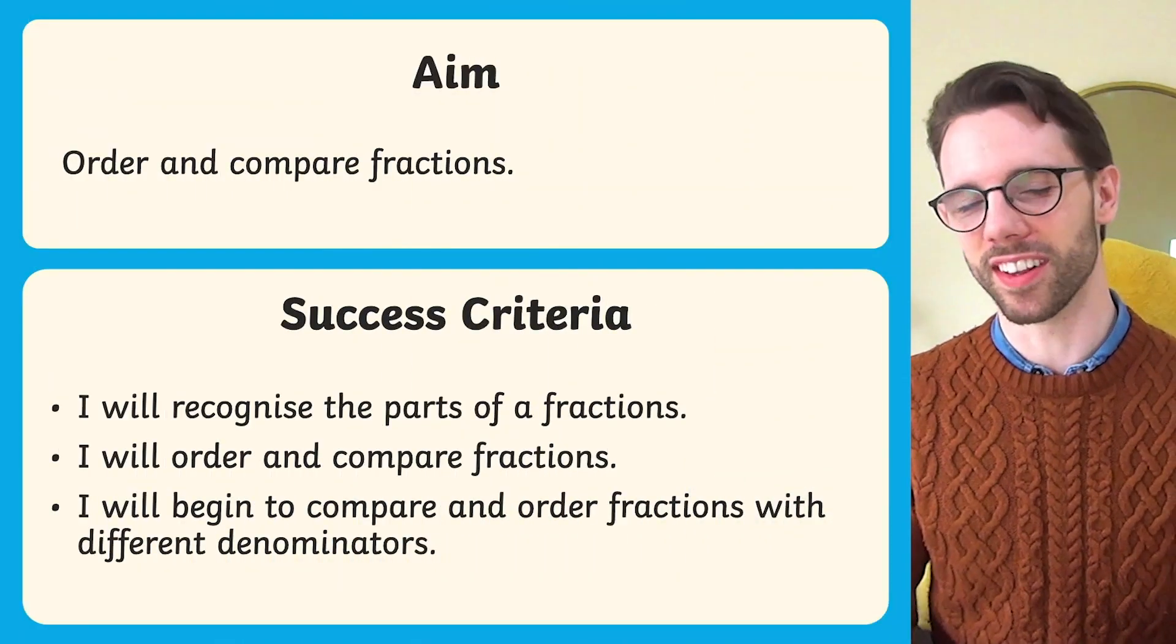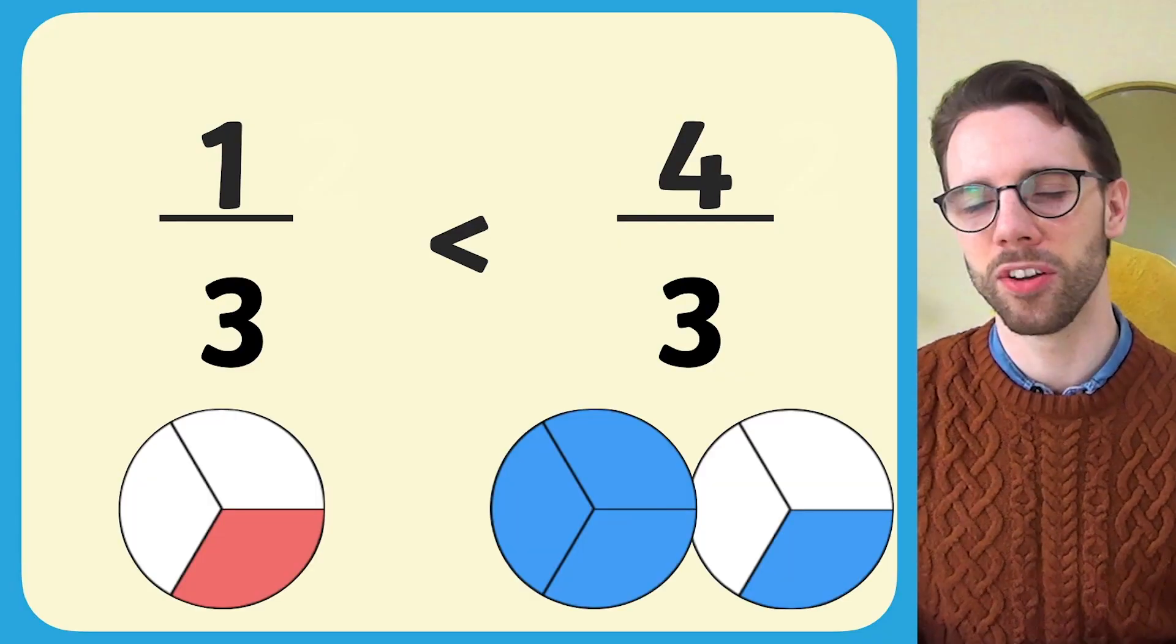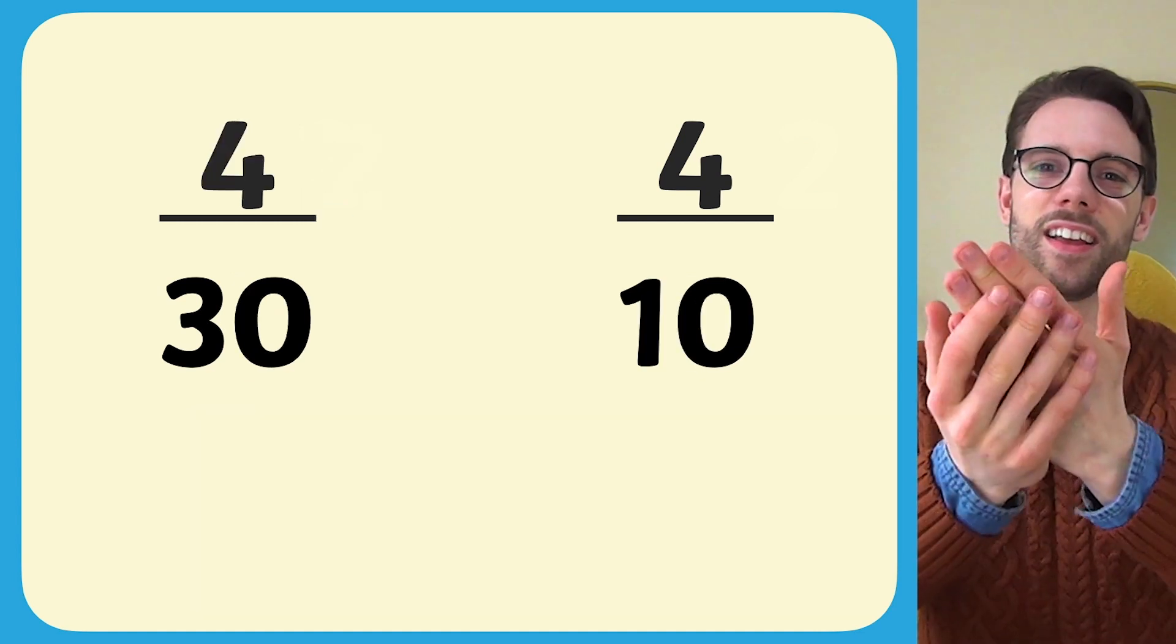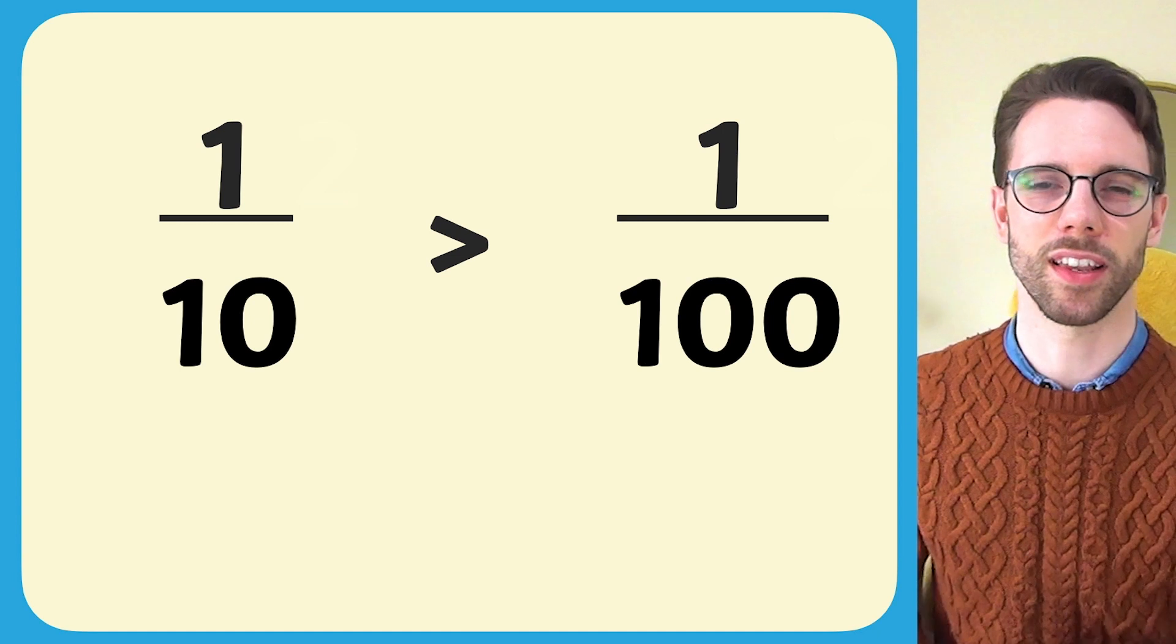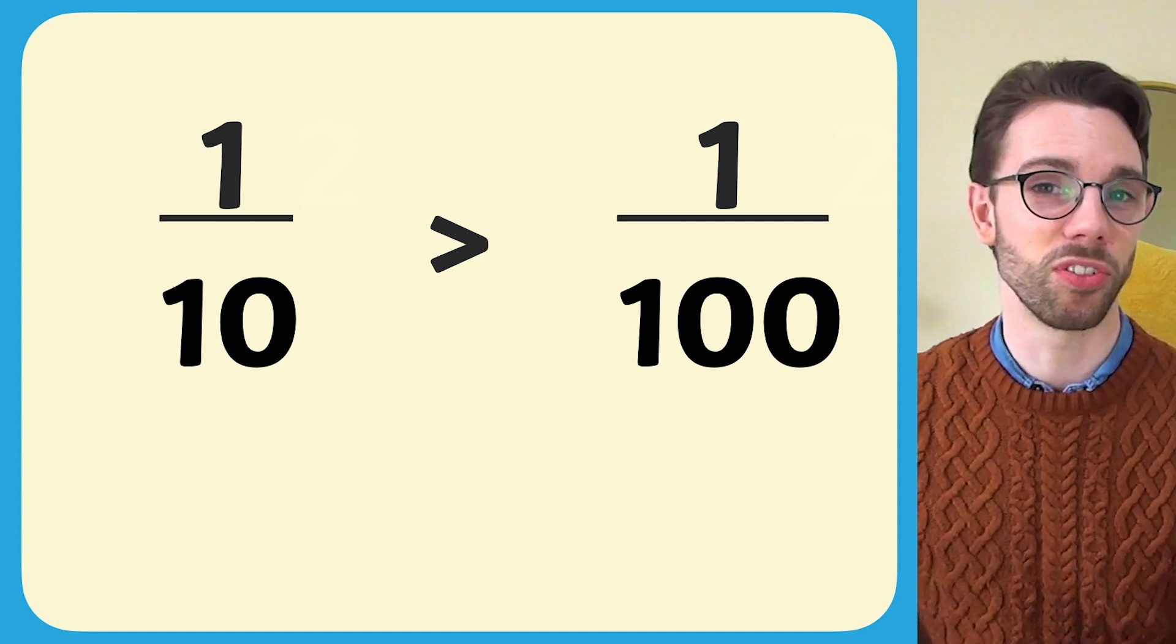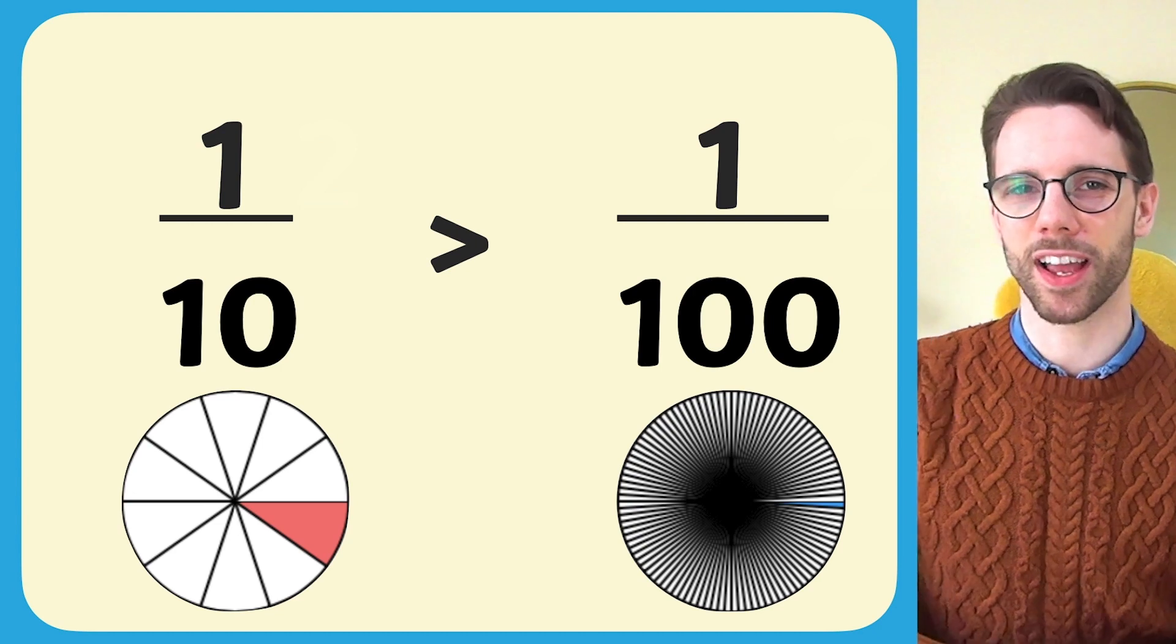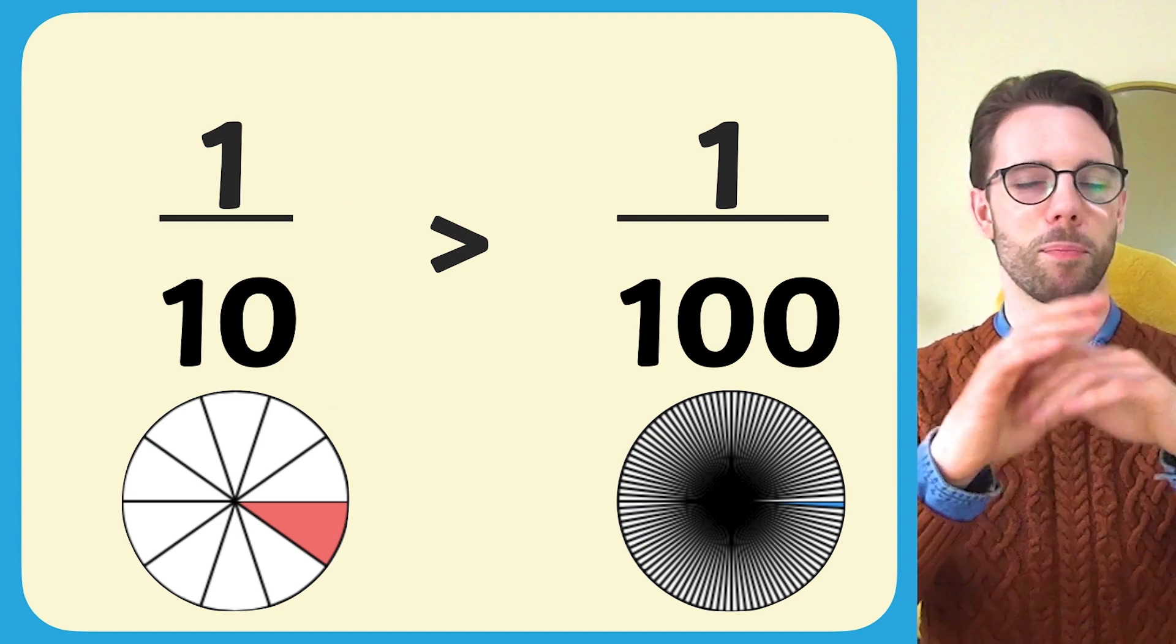In the third and final lesson, ordering and comparing fractions, Arthur covers comparing fractions with common denominators and works up to look at fractions where the numerators are the same and the denominators different. Really helping children understand that a larger denominator means the whole has been shared into more pieces and therefore a larger denominator means each individual piece is smaller.